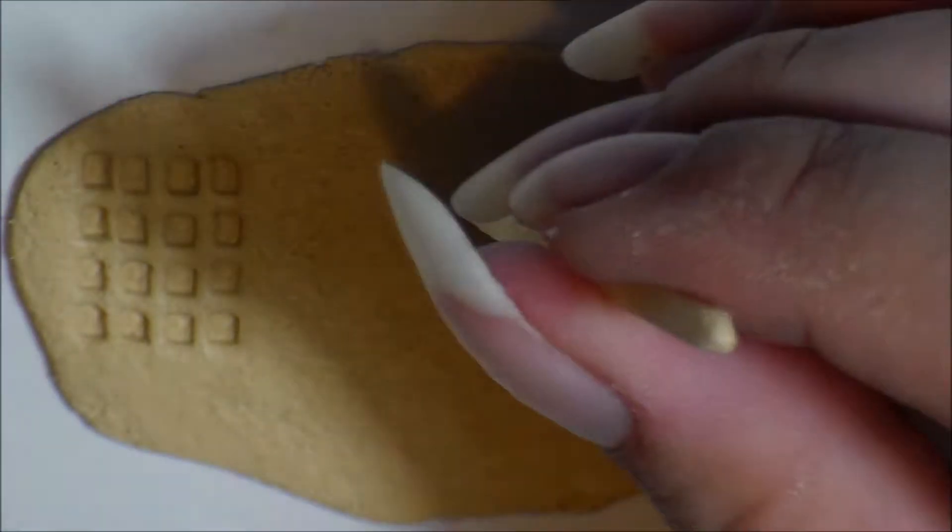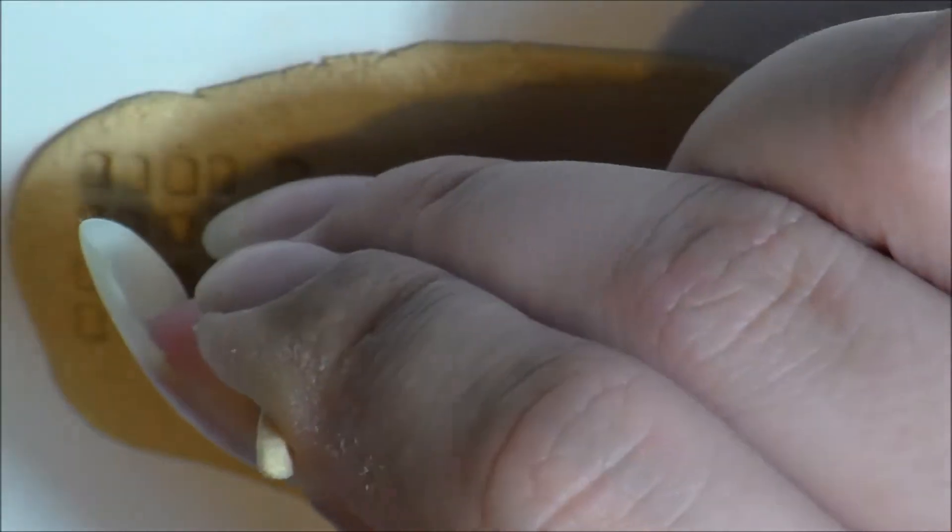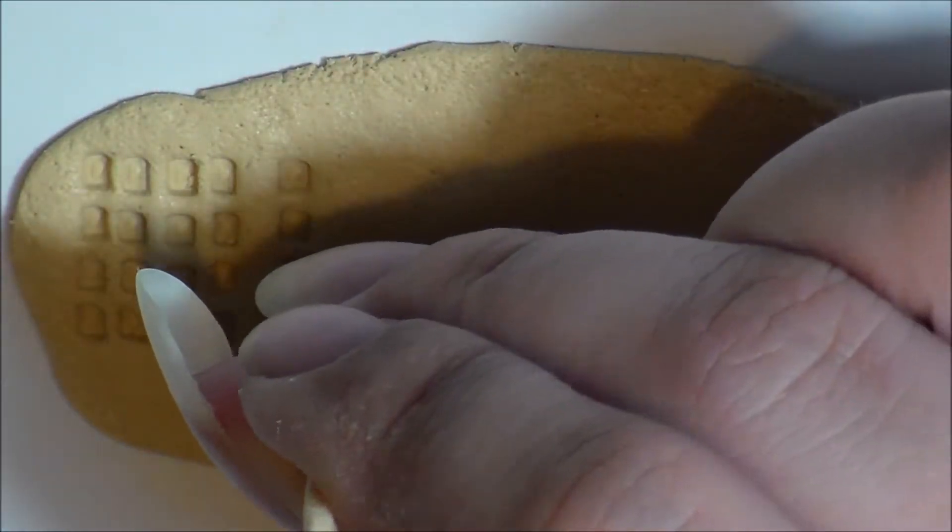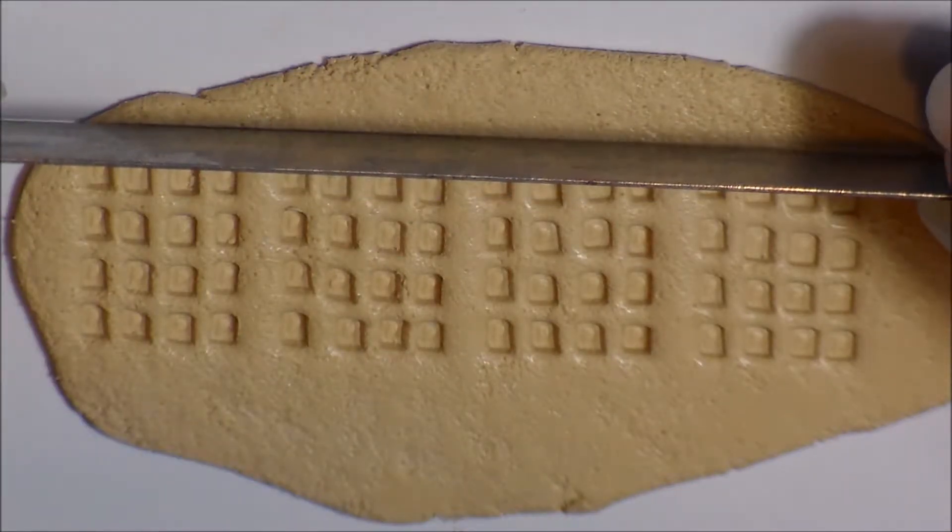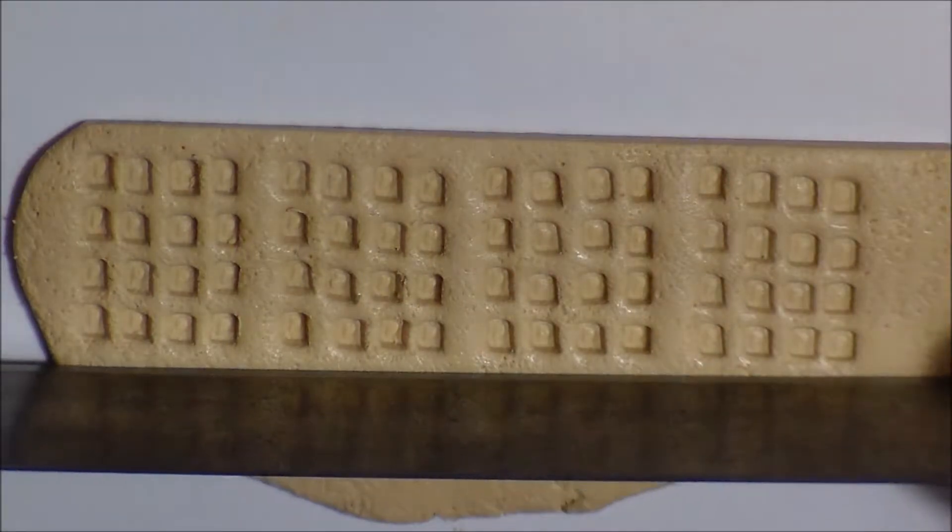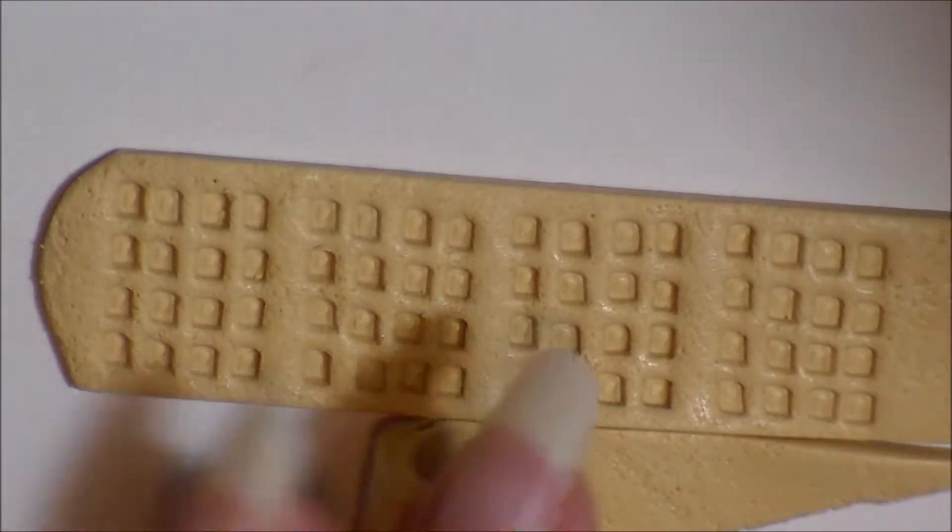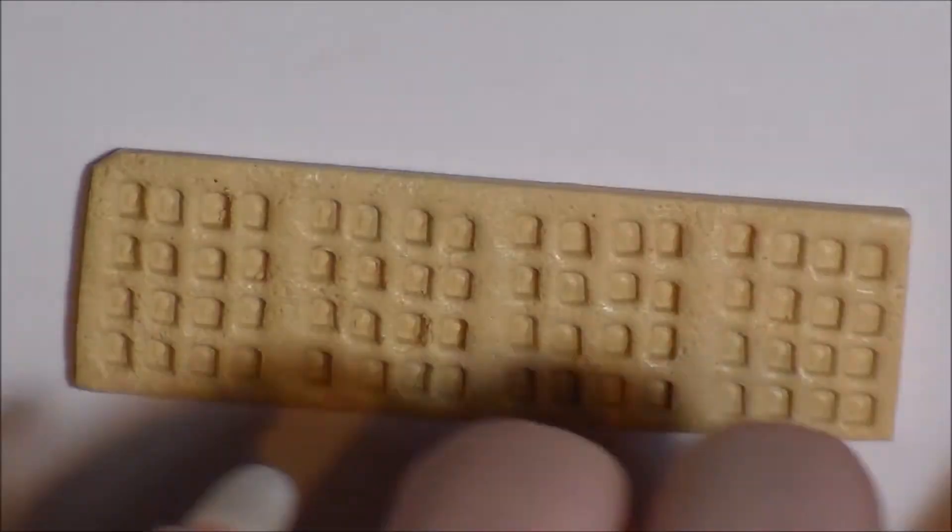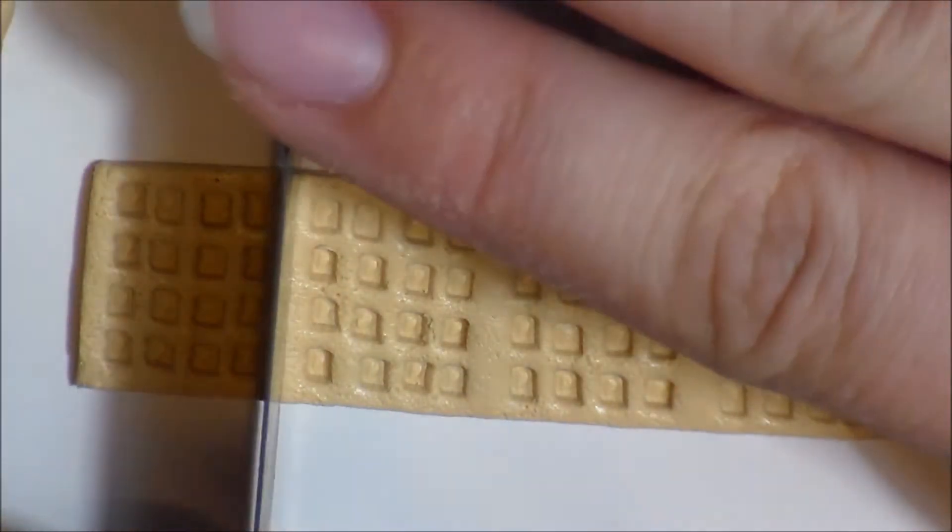Make two sets of this for each waffle you want. Then cut off the excess clay from each edge. Then make another cut to divide each set.